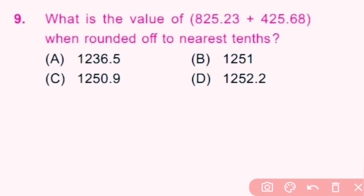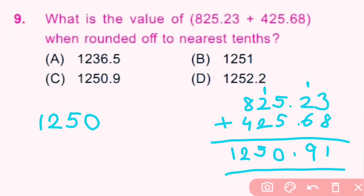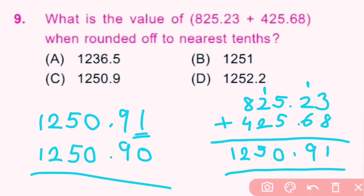Question number 9: What is the value of 825.23 plus 425.68 when rounded off to the nearest tenth? Adding: 3 plus 8 is 11, carry 1; 2 plus 6 is 8 plus 1 is 9; decimal point; 5 plus 5 is 10, carry 1; 2 plus 2 plus 1 is 5; 8 plus 4 is 12. The sum is 1250.91. Rounding to nearest tenth: hundredth place is 1, which is less than 5, so it becomes 0. Rounded figure is 1250.9. C is the correct answer.